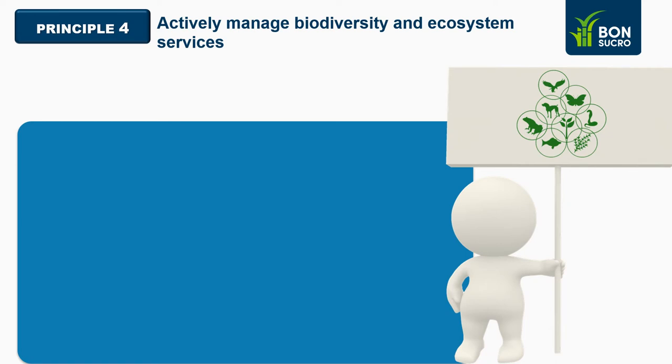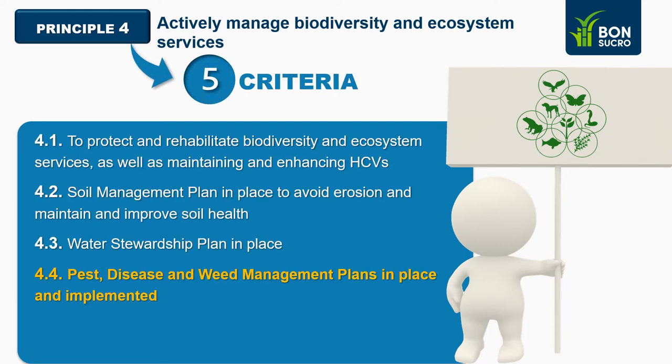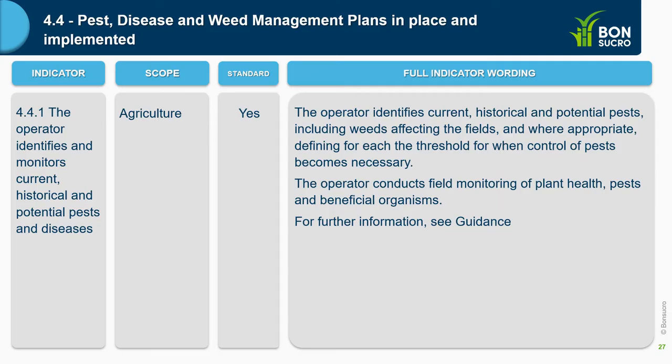We pass now to Criterion 4.4. Indicator 4.4.1: the operator identifies and monitors current, historical, and potential pests and diseases. This is a new indicator for agriculture. The operator identifies current, historical, and potential pests affecting the fields, and where appropriate, the dirt thresholds when control of pests becomes necessary.